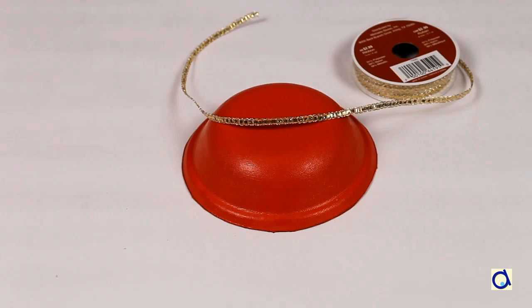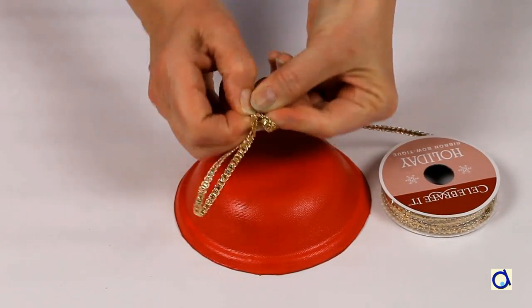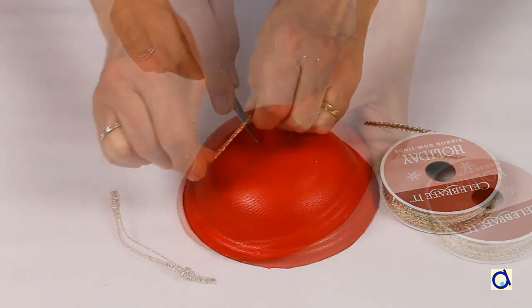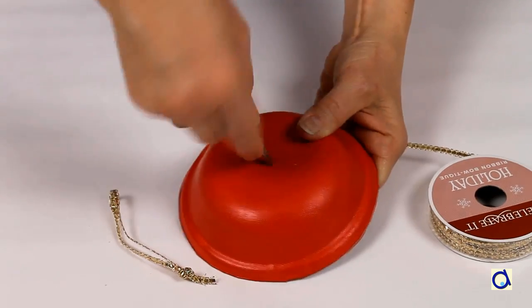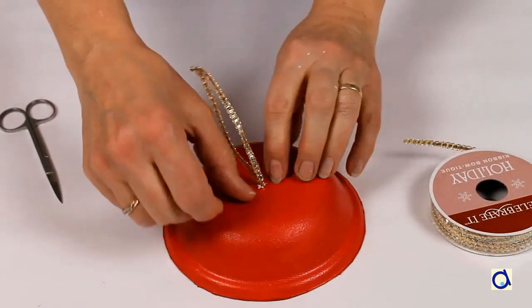Take a decorative ribbon and cut a length of about 10 inches. Fold it in half and tie a double knot. Make a small hole in the centre of the ball and pass the ribbon through the hole so that the knot is inside the ball.